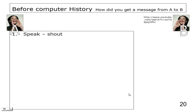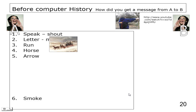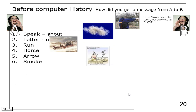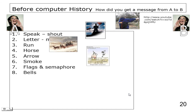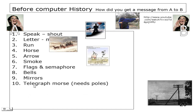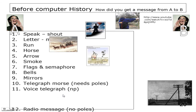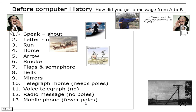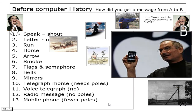Looking at communication over the years of history: we speak, shout, write letters, run, use a horse, arrow, smoke, flag and semaphore, bells, mirrors, and then Samuel Morse gets a grant to create telegraph poles and wire to send Morse code. Then we get voice telegraph, radio, messages with no poles, mobile phones with fewer poles, Steve Jobs and the Apple phone. What's next - where is it going?